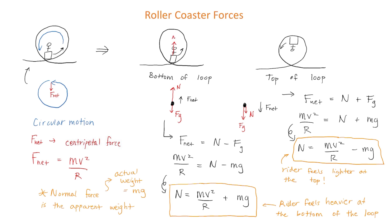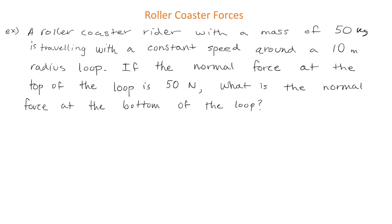The most important thing to learn from this is how to draw the forces when the object is at the bottom and the top of the loop. Let's do a quick example. We have a roller coaster rider with a mass of 50 kilograms traveling with a constant speed around a 10-meter radius loop.